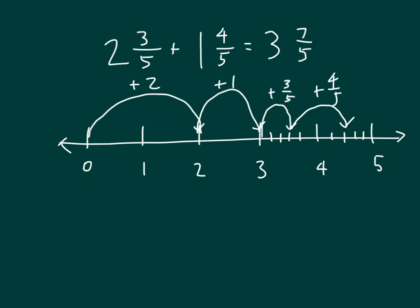From the number line, we can see we end up at four and two fifths, which makes sense because seven fifths equals one whole along with two fifths, and two fifths plus three gives us four and two fifths.